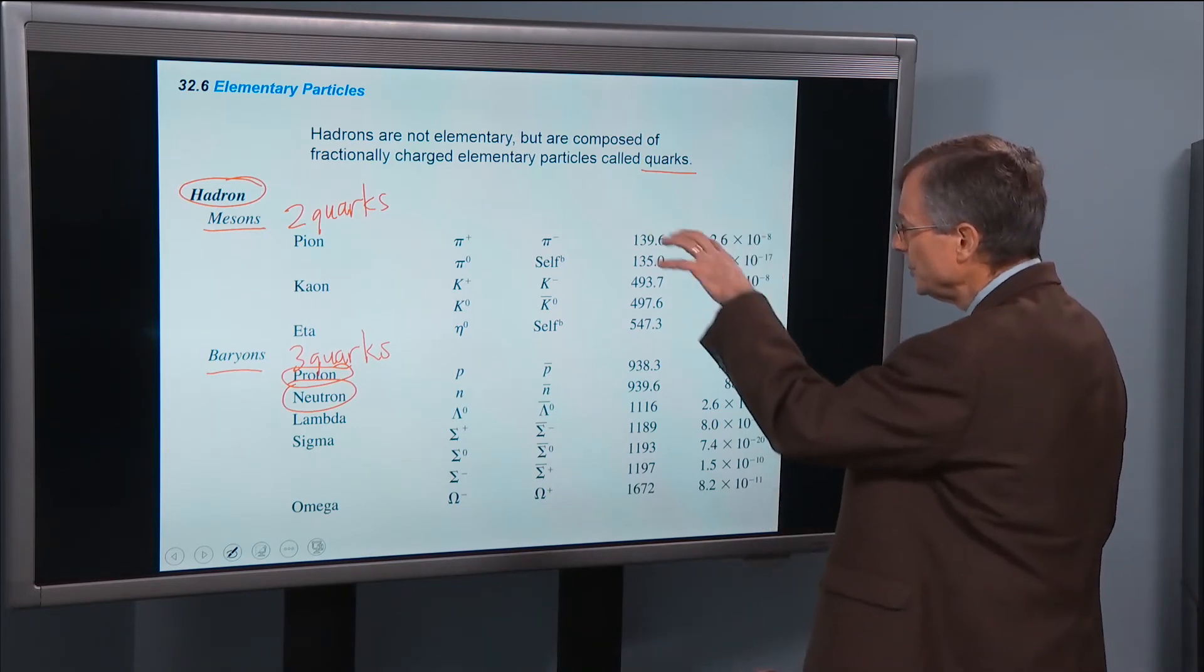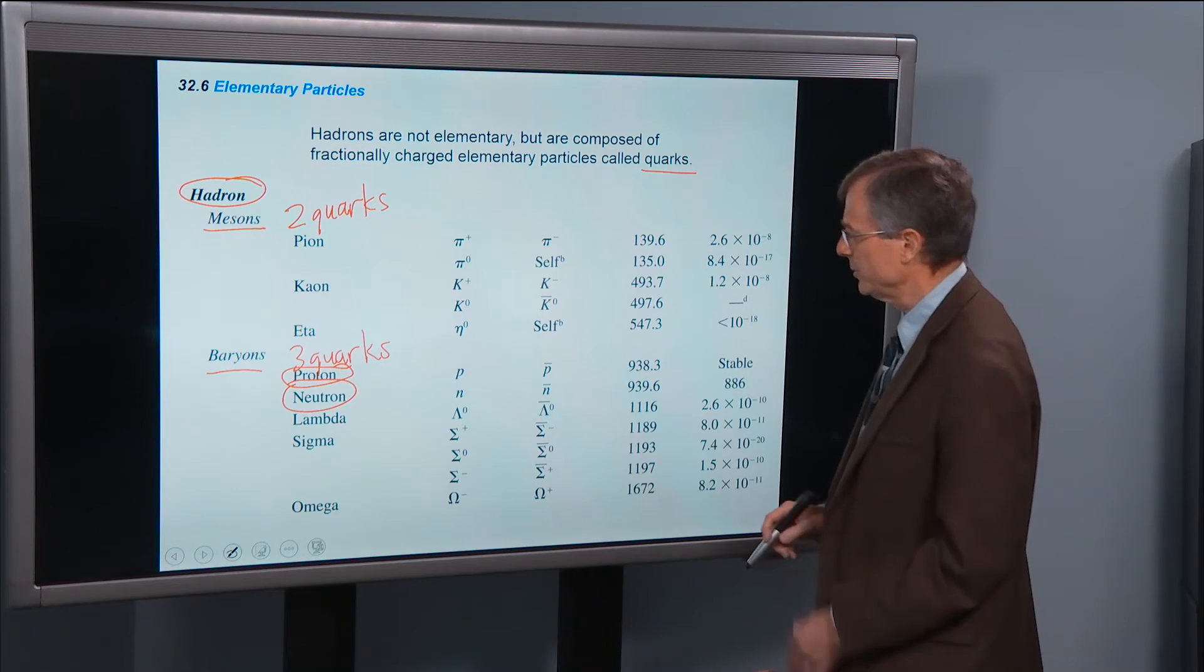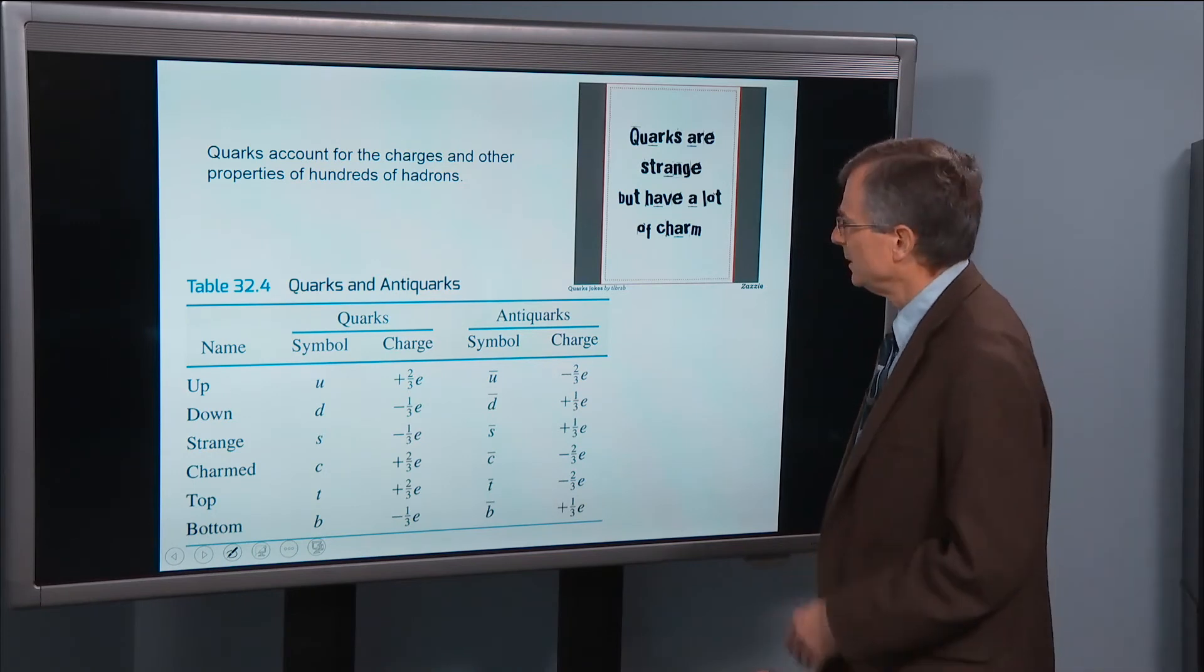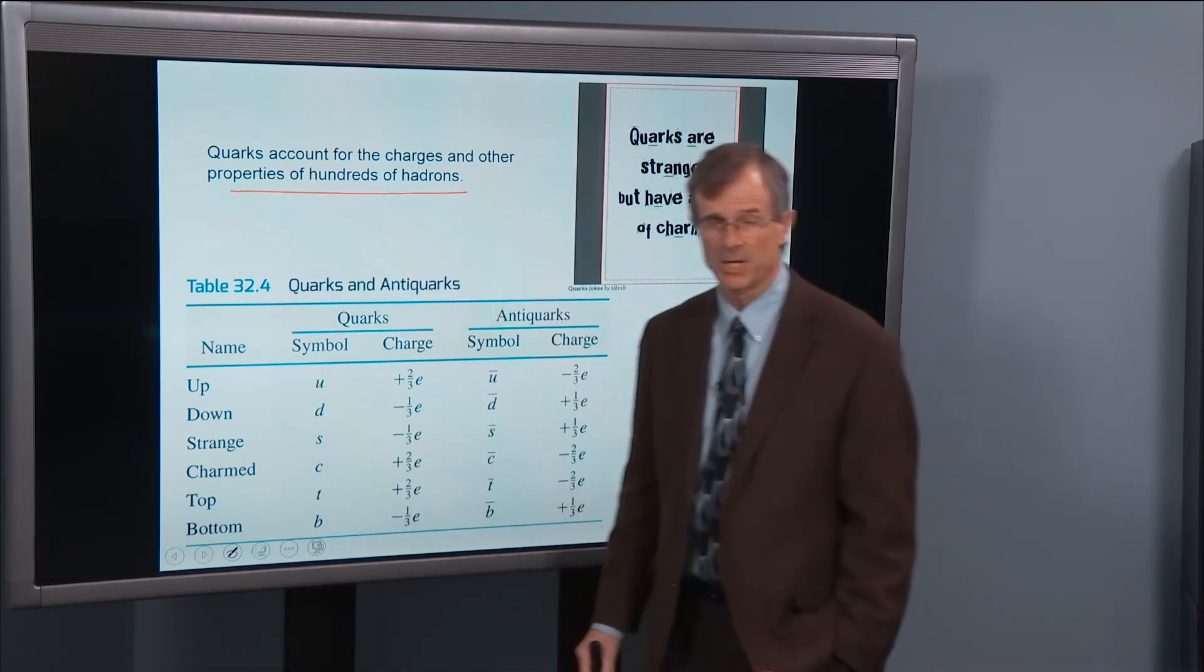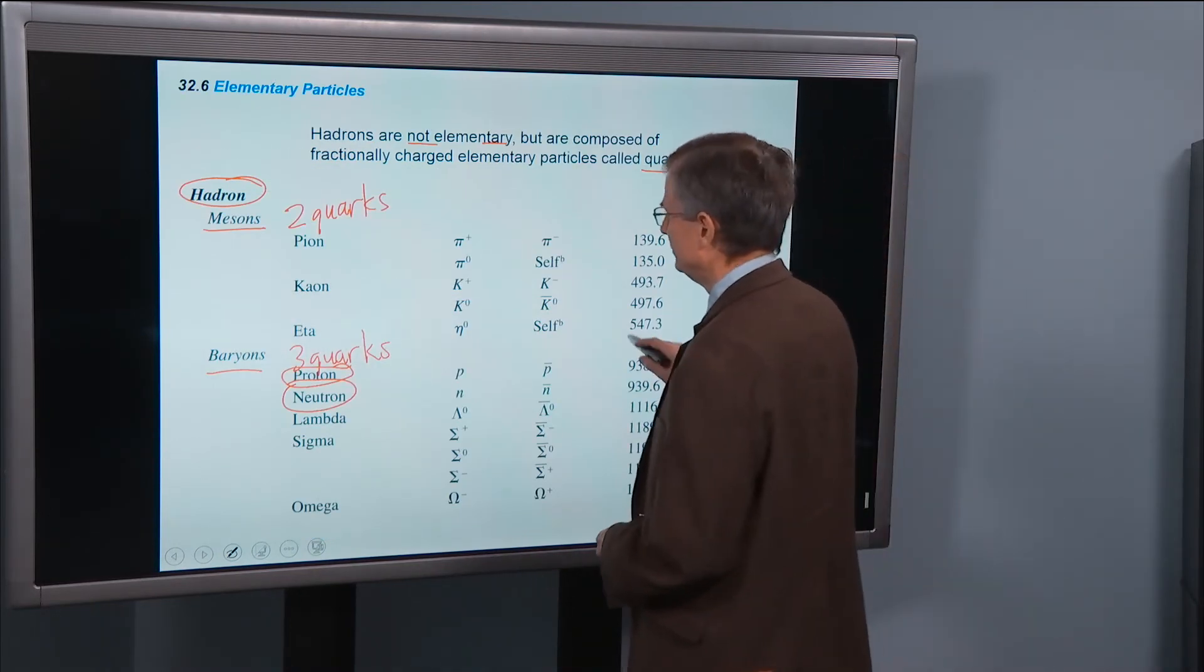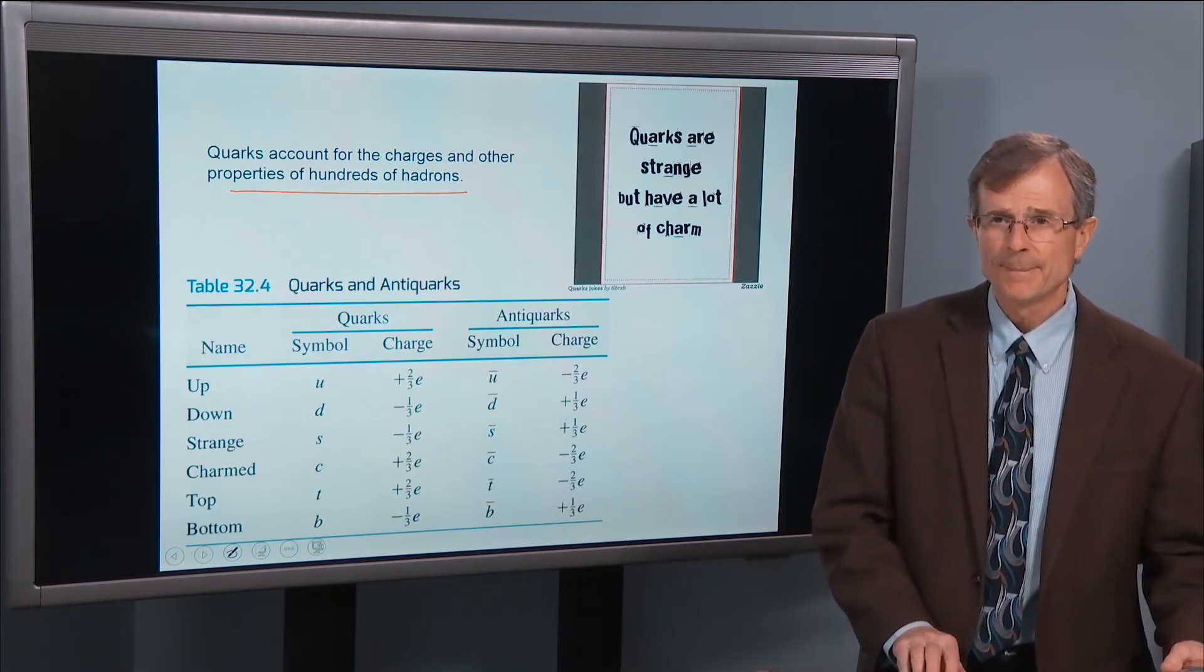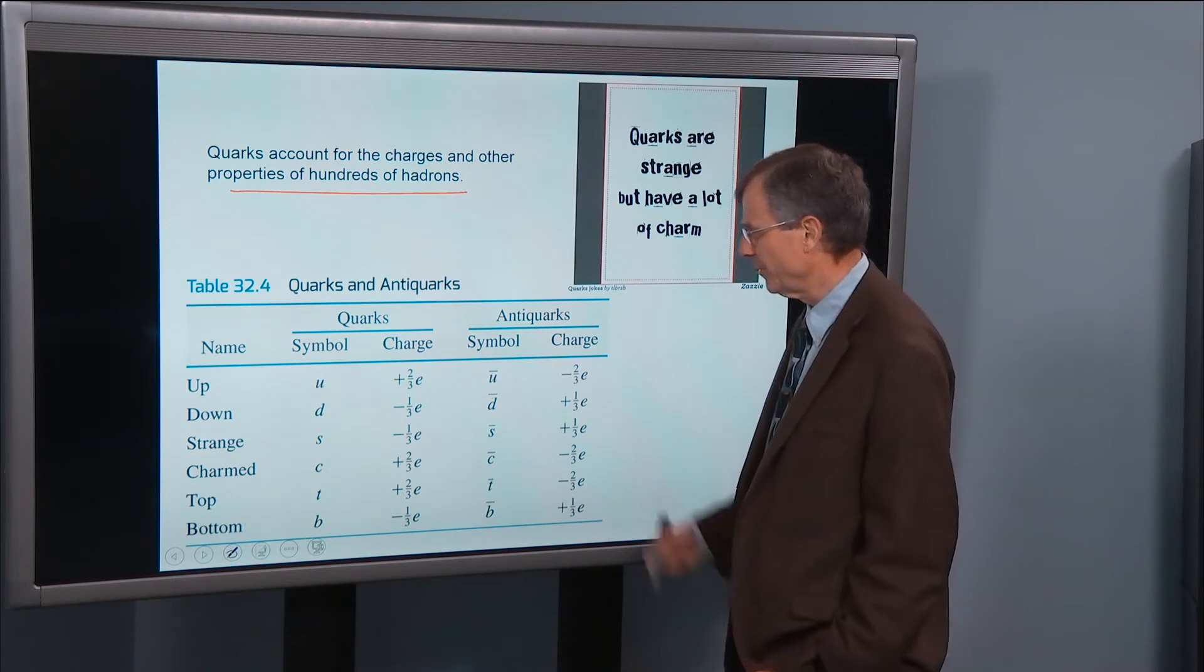We've talked about two types of hadrons, mesons and baryons. These hadrons are not elementary, but are composed of quarks. These quarks account for the charges and other properties of hundreds of hadrons. There are six quarks. They're fractionally charged.